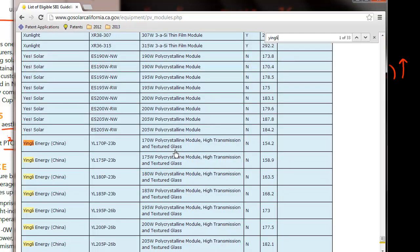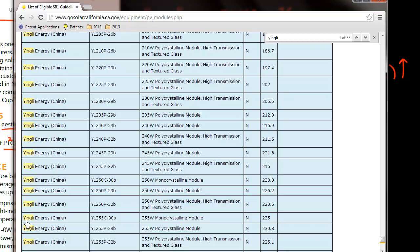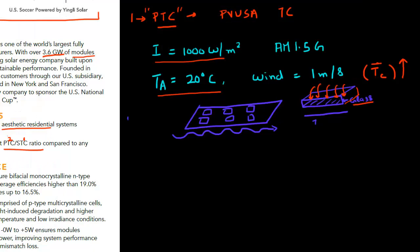So let me search for Yingli over here. So Yingli and then the panel number which I was using was this 30B panel over here. So I see that it says it's made in China. It says the panel number, then it says it's a monocrystalline silicon module. And then it has a PTC rating of 235 watt. So for this panel, the PTC rating as specified by the California Energy Commission is 235 watt.